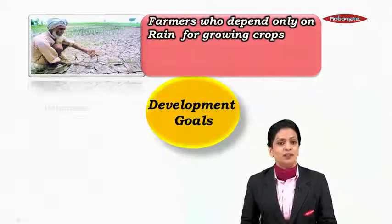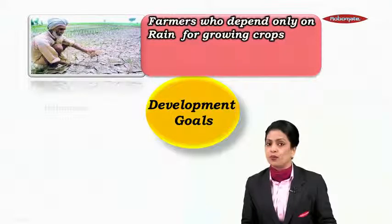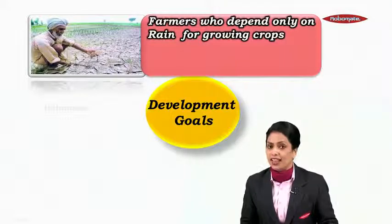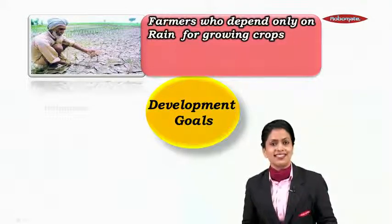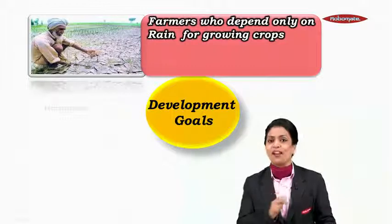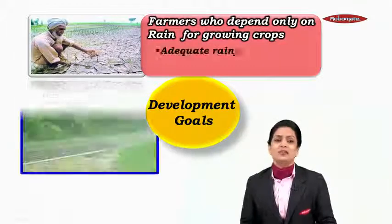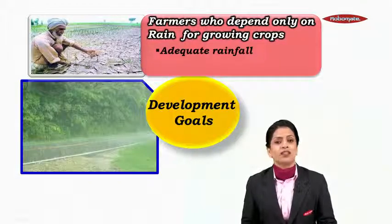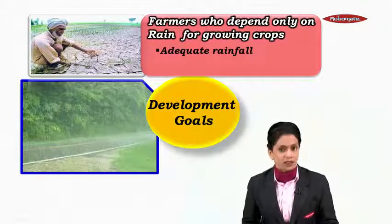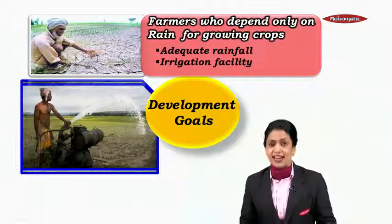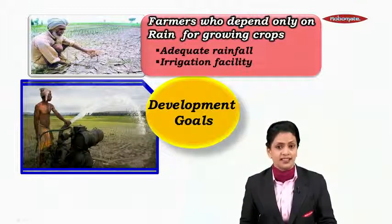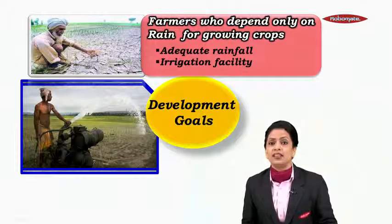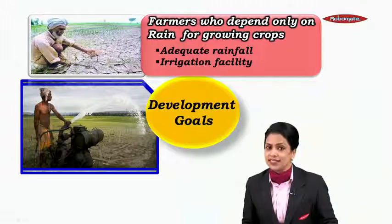For a farmer who depends only on rain for growing crops, his aspiration is to have adequate rainfall, and in case of no rains, he would want irrigation facilities.